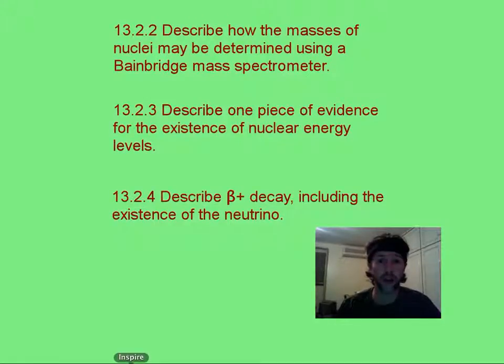We're going to start talking about how a mass spectrometer works to know the exact mass of an atom. Then we're going to leap over and talk about how the nucleus has different energy levels, or how we know that. And then we're going to talk about positron decay, which is really not that difficult since you already know about beta decay.